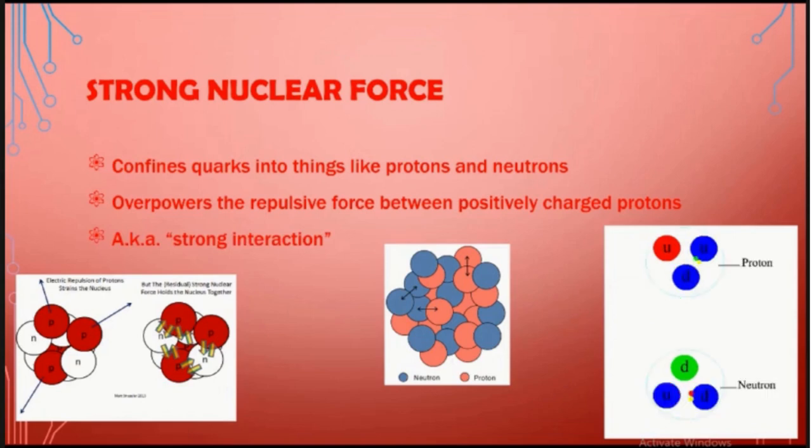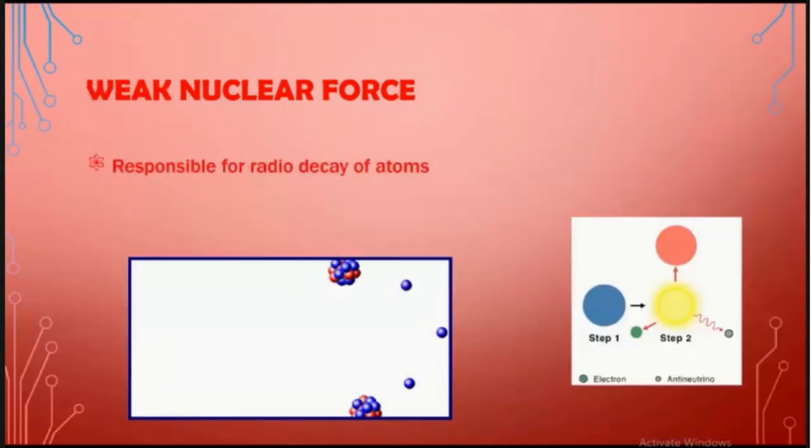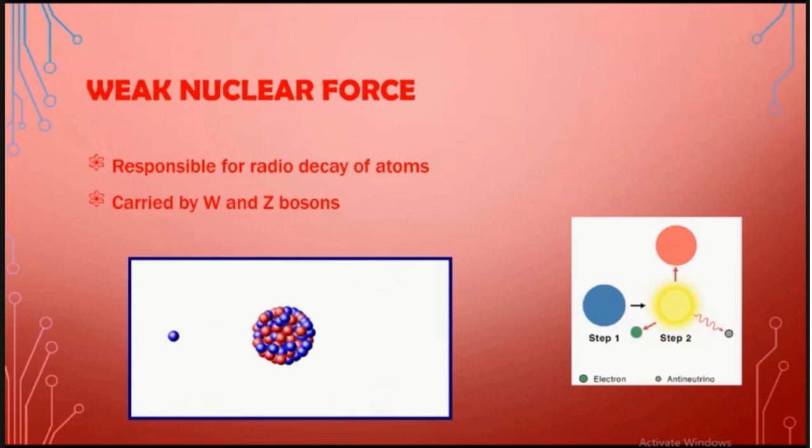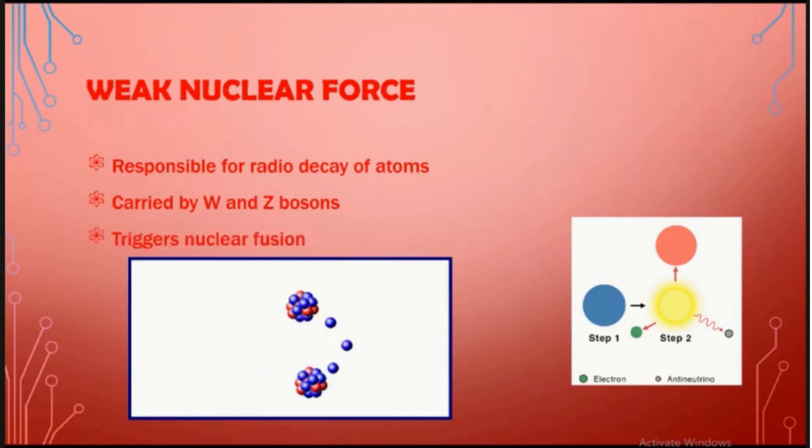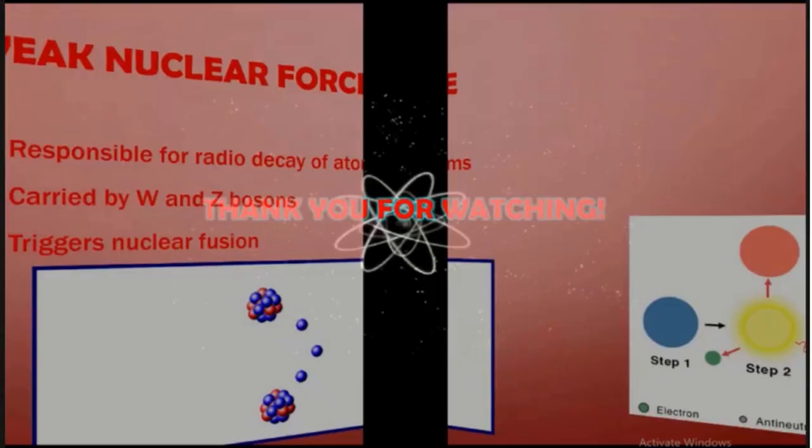Now you have the weak nuclear force. What is this? Weak nuclear force is responsible for the decay of atoms. It is made by W and Z type bosons. Bosons are basically particles with a half integer spin. Weak nuclear force triggers nuclear fusion, which is atomic fusion.